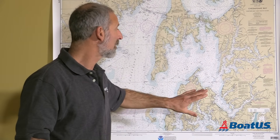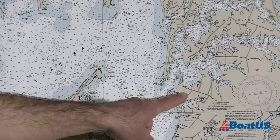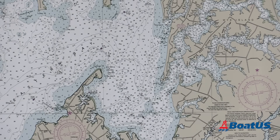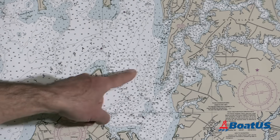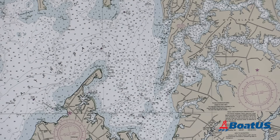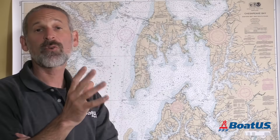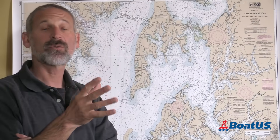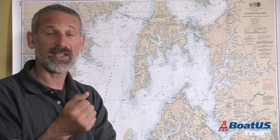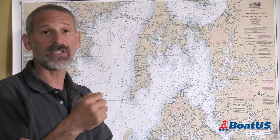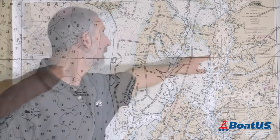This might seem a little basic, but we still got to cover it — these are the basics. First off, look at the color differences. This tan color over here is land. The white is water. That slightly blue shade is shallow water. Prominent features on land that you may want to use to visually navigate by are marked with a circle and a dot, like this water tank.